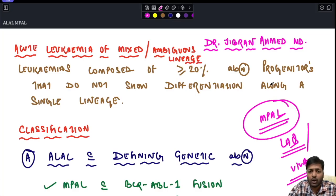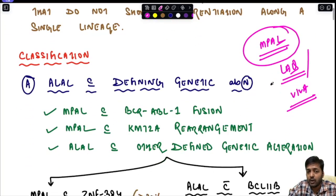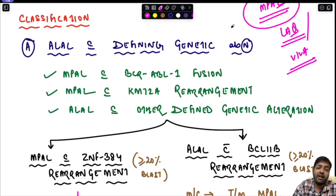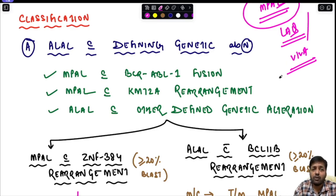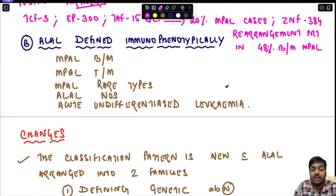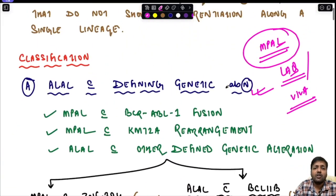We will start with the classification of acute leukemia of ambiguous lineage. In the current WHO fifth edition, it is subdivided under two headings — previously there were five headings. The first heading is acute leukemia of ambiguous lineage with defining genetic abnormality, and the second is acute leukemia of ambiguous lineage defined immunophenotypically.